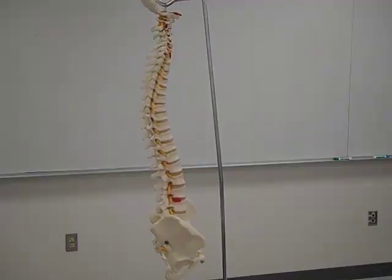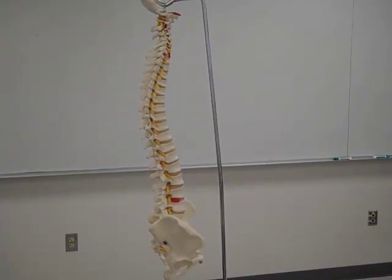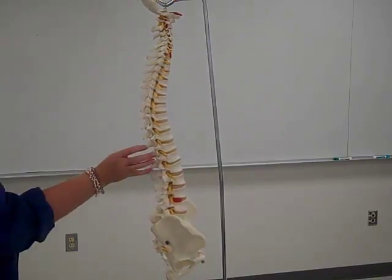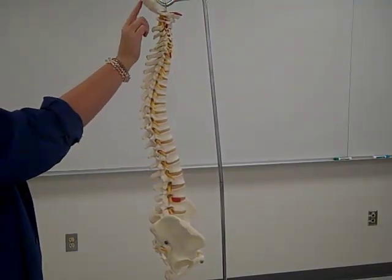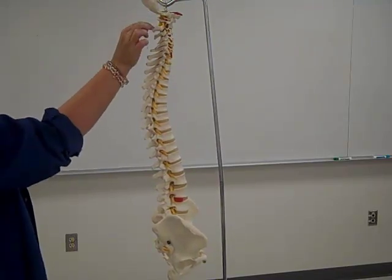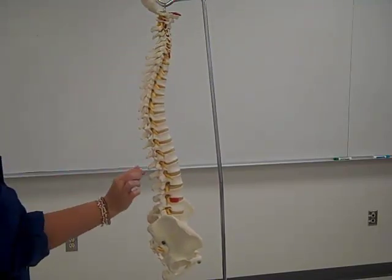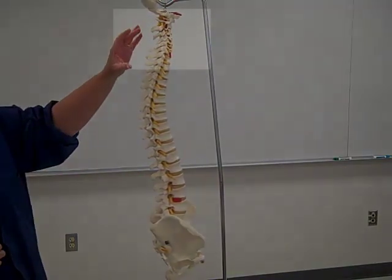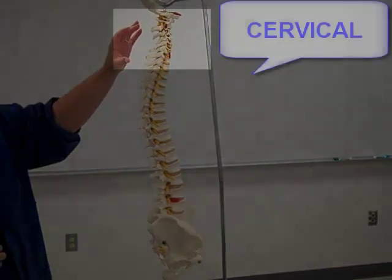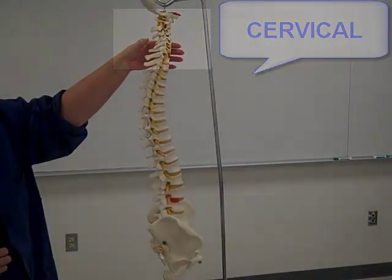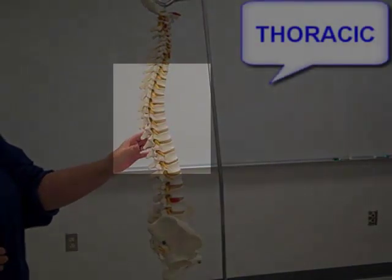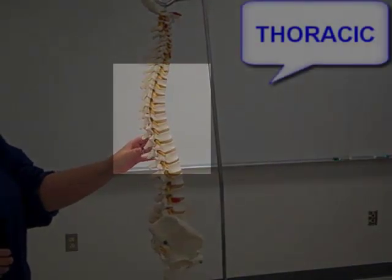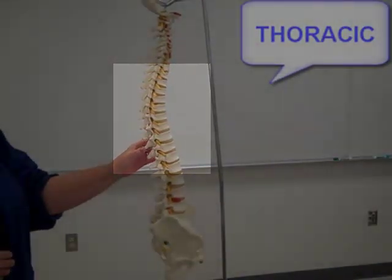Welcome to Aiken Technical College Biology. Today we're going to look at the spinal column. The spinal column is oriented to the base of the skull — this is the occipital bone. The foramen magnum is the hole where the spinal cord runs through. The first seven vertebrae are your cervical vertebrae, representing the vertebrae of your neck. The next twelve vertebrae are associated with your ribs — those are thoracic vertebrae.